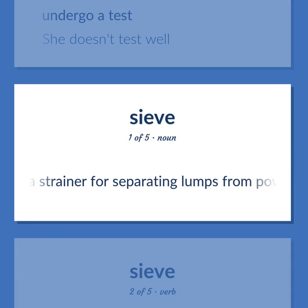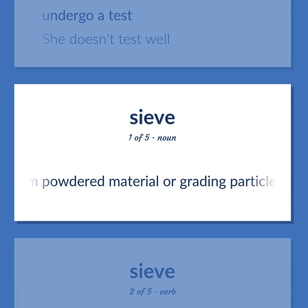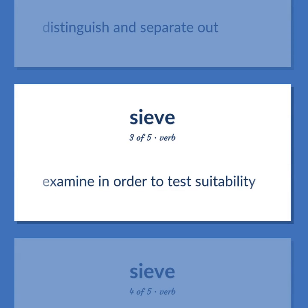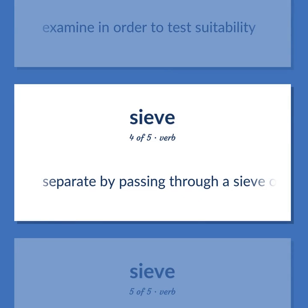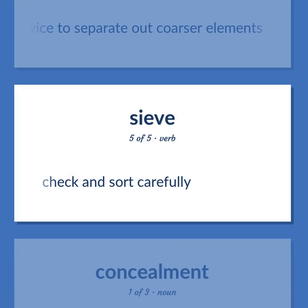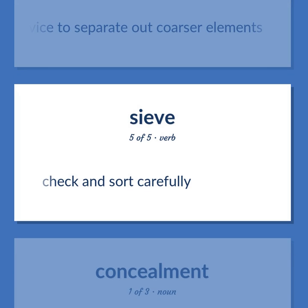A strainer for separating lumps from powdered material or grating particles. Distinguish and separate out. Examine in order to test suitability. Separate by passing through a sieve or other straining device to separate out coarser elements. Check and sort carefully.